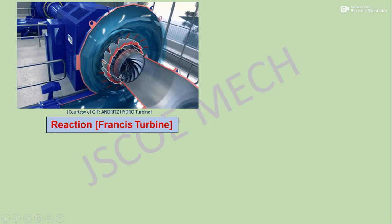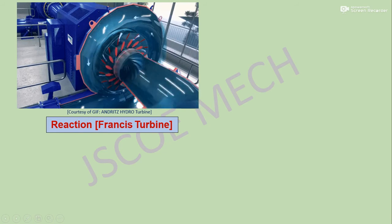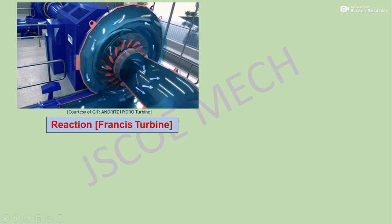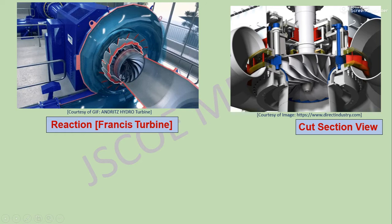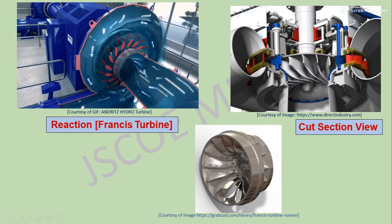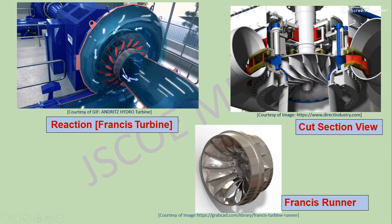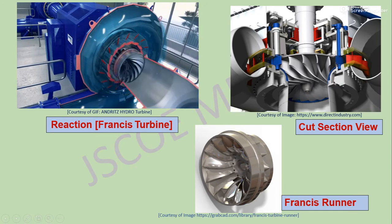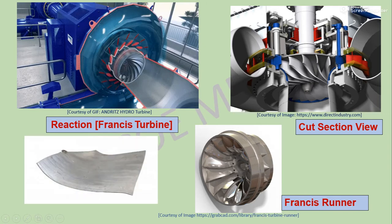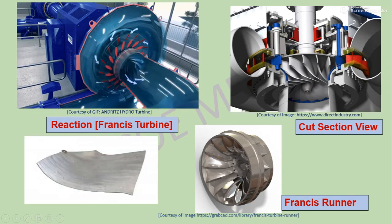In the case of a reaction turbine, that is a Francis turbine, here we see the runner which consists of a number of blades. Here is a cut-section view of the Francis runner. This is an actual photograph of the Francis runner. The blades of the runner are curved in nature, and this is a single blade.